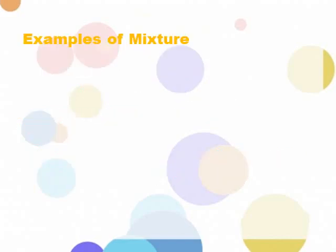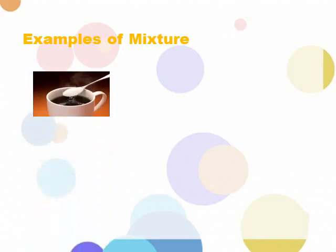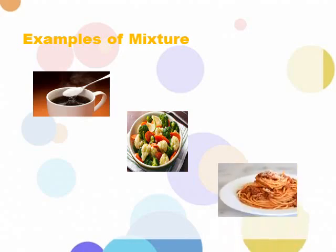So we have here the examples of mixture. We have three examples. The first one is coffee — the combination of coffee and sugar. We have mixed veggies; as you can see, there are different ingredients or vegetables in mixed veggies. The last one is spaghetti, which also has different ingredients present.